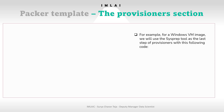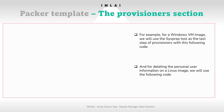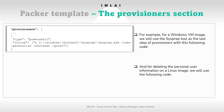When creating an image of a virtual machine, it is necessary to generalize it — in other words, delete all of the personal user information that was used to create the image. For example, for a Windows VM image, we will use the sysprep tool as the last step for provisioners with the following code.